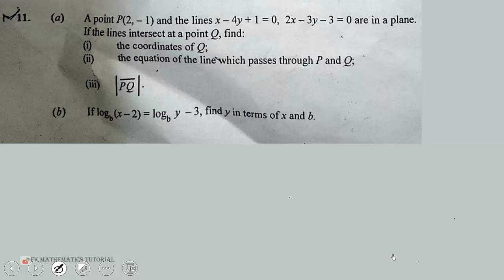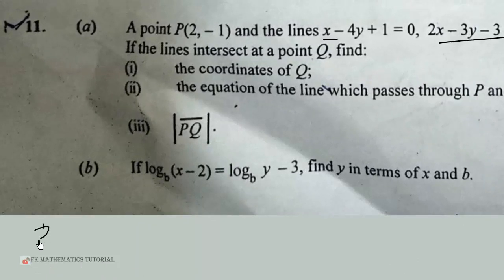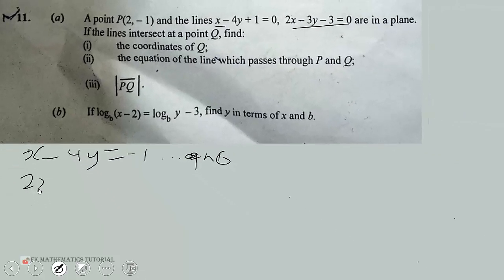Also find the equation of the line which passes through P and Q, and the magnitude of the line segment PQ. Let's solve part A first — finding the coordinates of Q. The equations of the lines are given, so we rewrite them in standard form. x minus 4y equals negative 1, which is equation 1. Then 2x minus 3y equals 3, which is equation 2. The equations are now in standard form.